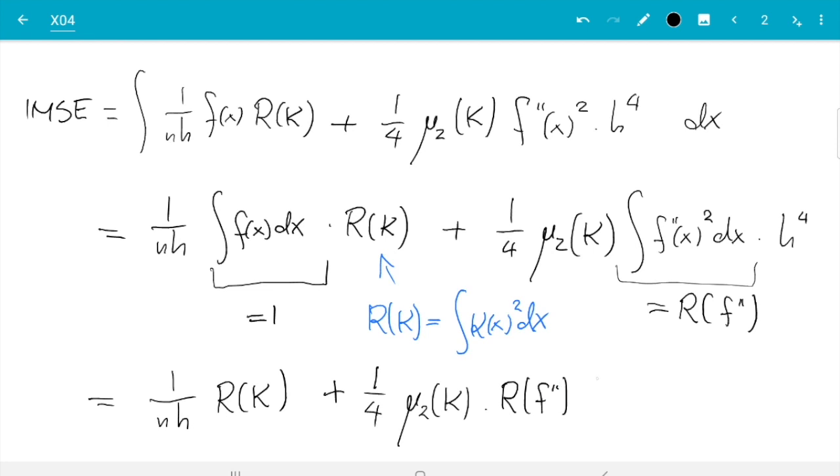That can now no longer depend on x because we just integrated out the x. And here one can ask exactly the same questions I asked before. Namely one can ask for which value of h is that thing minimal. And which value do you get at the minimum. And I show you the results in the notes.